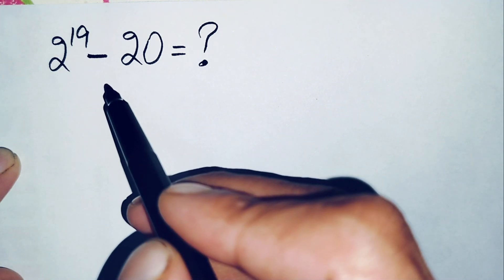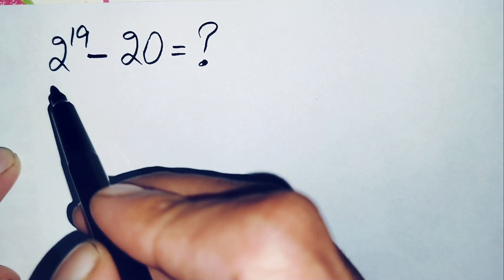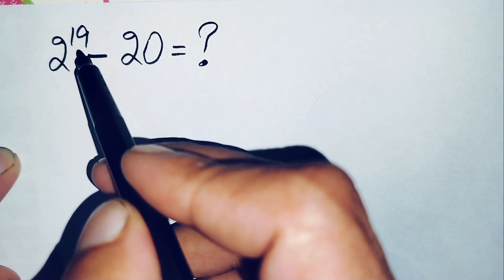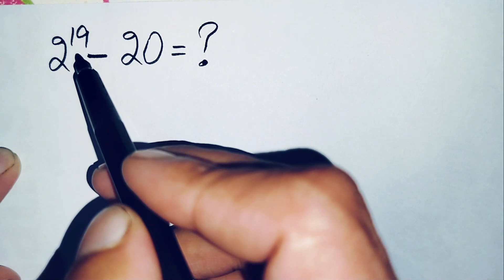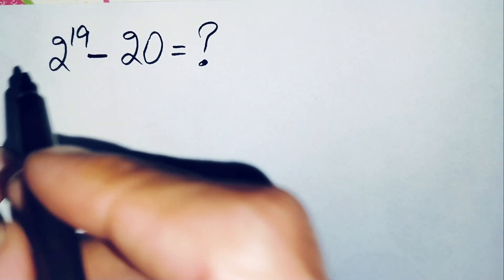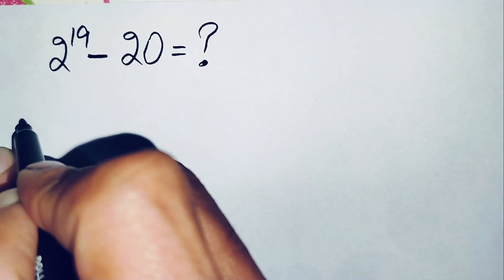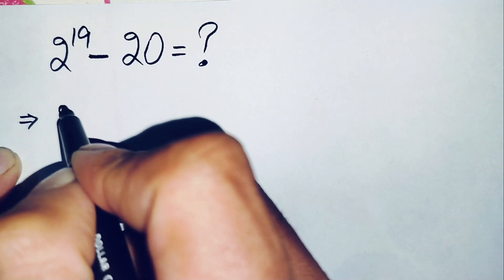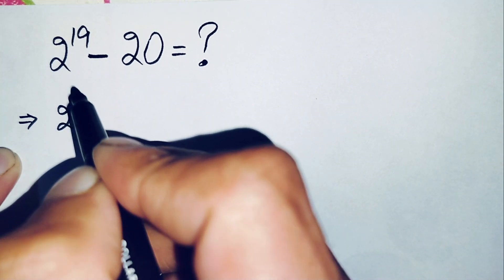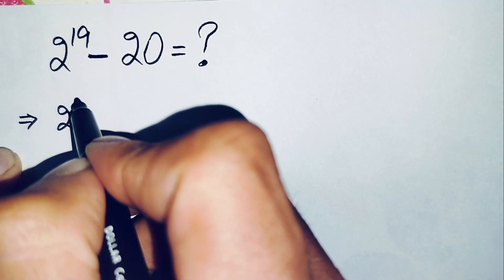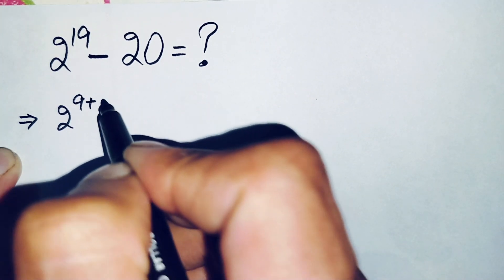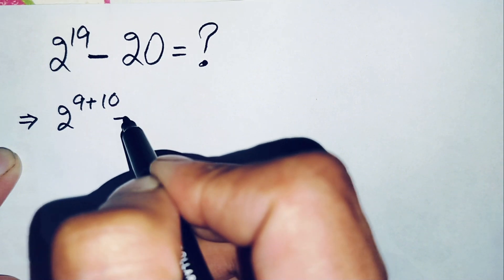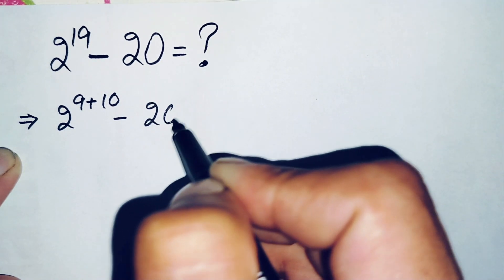So how can we solve this math problem? First of all, we will change this power 19 to the sum of 9 plus 10. So next we can write this equation as 2 raised to power 19, but 19 can be written as the sum of 9 plus 10, minus 20.